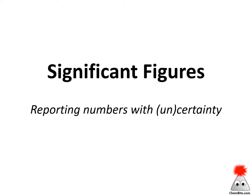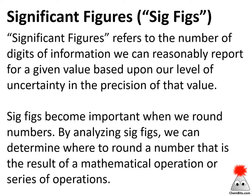Significant figures is a concept that comes up fairly often when we're doing problems, so let's take a few minutes to dig into those and figure out what we're talking about. Significant figures, or sig figs, refer to the number of digits of information that we can reasonably report for a given value based upon our level of uncertainty in the precision of that value. In short, significant figures are a way for us to communicate how precise a value is, and we communicate that by rounding our numbers off to a certain position.